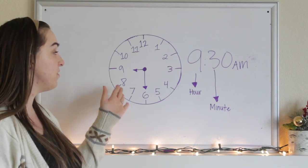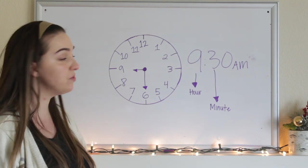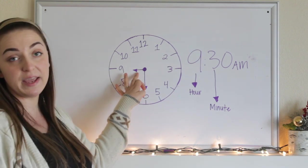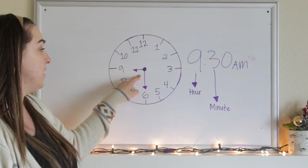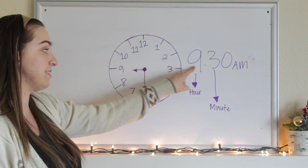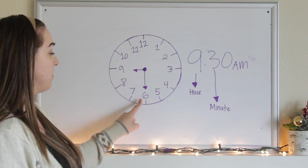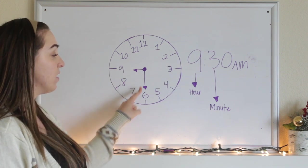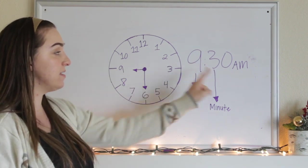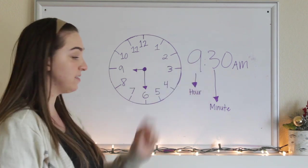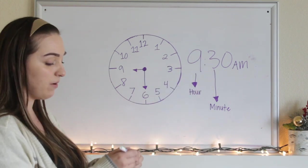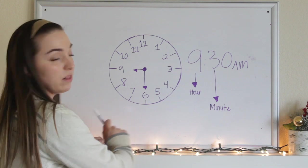Okay, so you can see I found 9:30 on here. I hope you did too. We have the short hand, which is our hour hand. So this is my short hand right here. And it's pointing to the 9 because that's my hour. It's 9. And then I have my long hand pointing to the 6 because I needed to find 30 minutes. Let's go ahead and count out how I got to the 6 with my long hand.